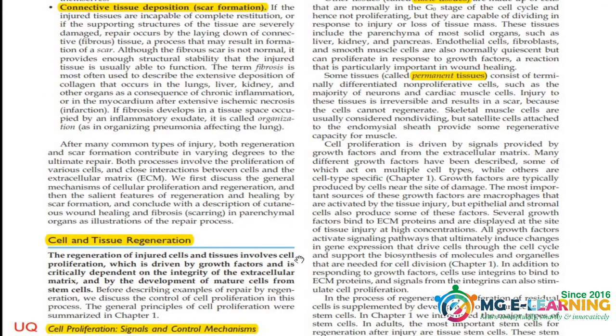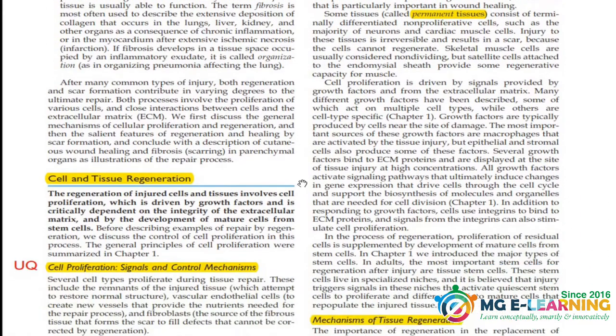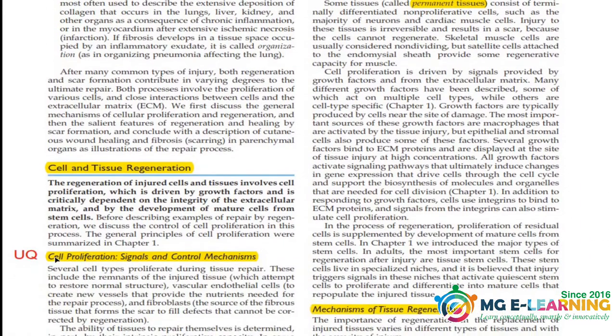Next, you have to cover cell and tissue regeneration. In this topic, the key subtopics are cell proliferation signals and control mechanisms, and the classification of cells into labile cells, stable cells, and permanent cells.